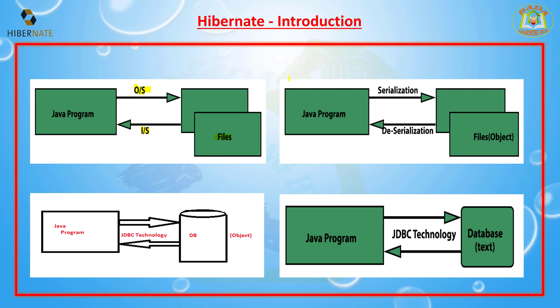Option 1 has some drawbacks, so Java introduced a second option: serialization and deserialization. In this option, we write object format data into files from a Java program. We use the serialization and deserialization Java API to write and read objects using files, so the back end stores objects rather than plain text.